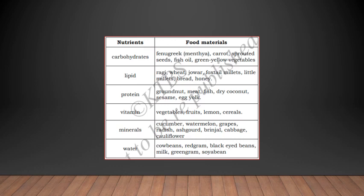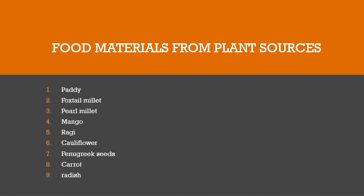These nutrients are helpful for our growth, repair, body building, and for being healthy. Now observe the table for the following food materials. The options given are: paddy, foxtail millets, meat, pearl millets, mango, cheese, ragi, ghee, egg, cauliflower, milk, fenugreek seeds, carrots, buttermilk, and radish.